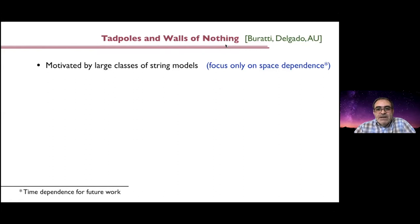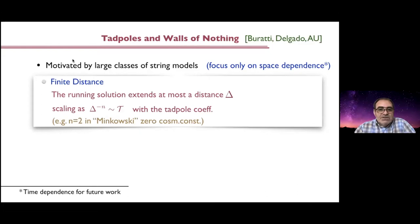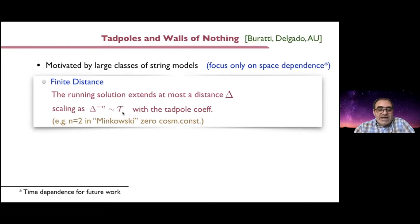These tadpoles have a lot to do with cobordism walls of nothing. The first observation — motivated by looking at dynamical tadpoles in large classes of string models — is that the running solutions have finite extent in spacetime. There is some kind of finite distance lesson: the running solutions extend at most a distance Δ, which scales in a particular way with the coefficient of the tadpole — the order parameter telling you how much you're not sitting in the vacuum, the slope of your potential. The inverse of this spacetime distance goes like the tadpole to some power, typically equal to two for Minkowski or zero cosmological constant configurations.